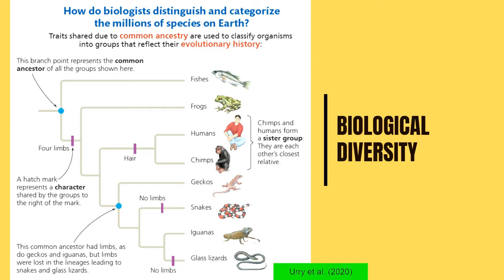We will learn more about that as we go along. Please note also that chimps and humans form what they call a sister group, because they are each other's closest relative.